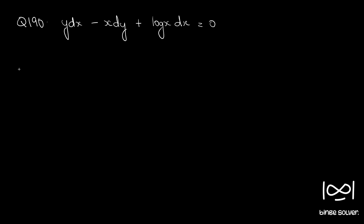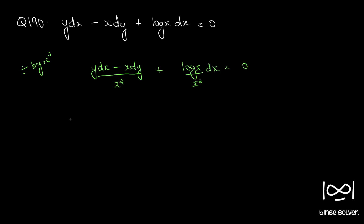What we will do is divide by x squared. So y dx minus x dy divided by x squared, plus log x by x squared dx equals zero. If you are familiar with the list shown at the beginning, this form — x dy minus y dx by x squared — is d(y/x). Here it is y dx minus x dy, so we take a minus sign outside, and log x by x squared is still a function of x alone, so we can integrate this.